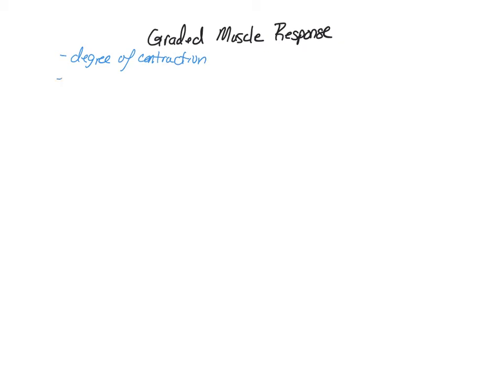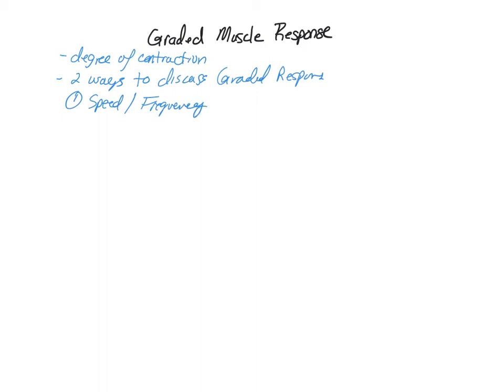Now let's talk about graded muscle responses — the degree of contraction. There are two ways to discuss graded responses: you can look at the speed or frequency, which includes terms like muscle twitch, summation, and tetany — both incomplete and complete, though complete tetany only happens in a lab setting.